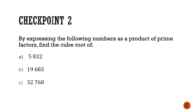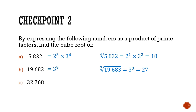Let's go through the answers. For part A, the prime factorization gives us 2 cubed times 3 to the power of 6. When we cube root, we divide both indices by 3, giving 2 to the power of 1 times 3 squared, which is 18. For part B, the prime factorization is 3 to the power of 9; cube rooting gives 3 cubed, which is 27. For part C, the prime factorization is 2 to the power of 15; dividing by 3 gives 2 to the power of 5, which is 32.